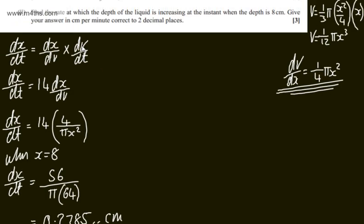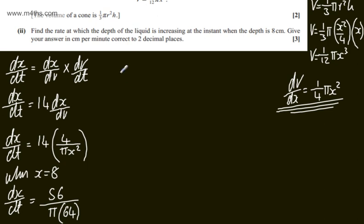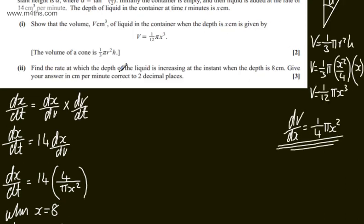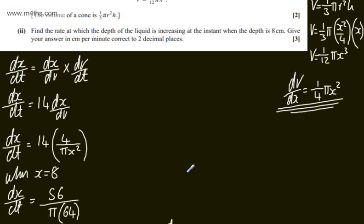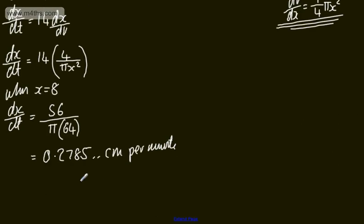We're looking now at the rate of change of the depth, so it's going to be centimeters per minute. So we can see here this volume of centimeters cubed, so this is going to be centimeters per minute. We're asked to give our answer now to two decimal places. So to two decimal places, it will be now 0.28. So 0.28, and that's now to 2dp, and that's centimeters per minute.